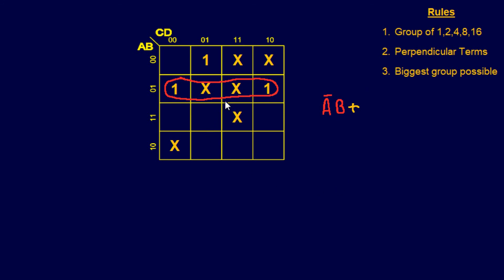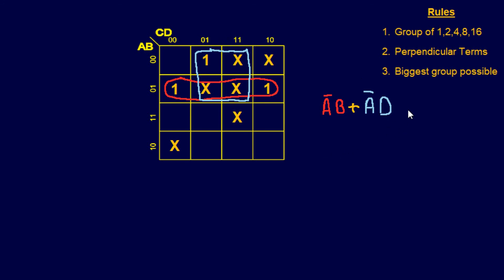Now we have one more group. I have a one, and I can make a two-group, but there are also don't cares to the right of it. Looking at it, I can probably make a four-group. An eight-group is out of the question and a sixteen-group would take up the whole map. So a four-group is the next best bet, and that covers all the ones. Some don't cares weren't covered — we don't need them. This group comes out to A-not, the B and B-not cancel, then C-not·D and C·D — the C cancels — leaving D. So this group is A-not·D. The final equation is A-not·B + A-not·D.